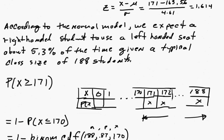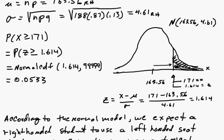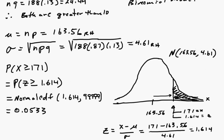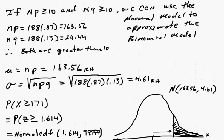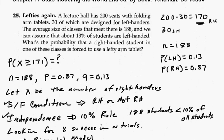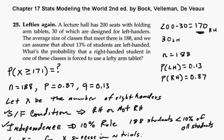So there's two ways to do this problem but one of the things that I'm trying to emphasize here is identifying the conditions when you can use the normal model to approximate a binomial model.